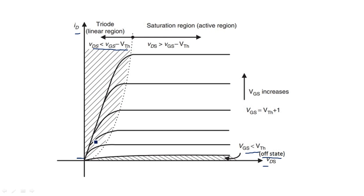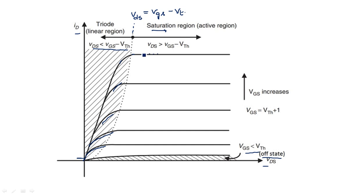In the non-saturation region, IDS increases with respect to VDS, as seen in the characteristic curves. This continues until the point where VDS equals VGS minus VT. At this particular point, the transistor enters the saturation region. Beyond this point, even if you increase VDS, the current will not increase — the current becomes stabilized. This is the meaning of saturation: the current gets saturated and will not increase beyond that value.